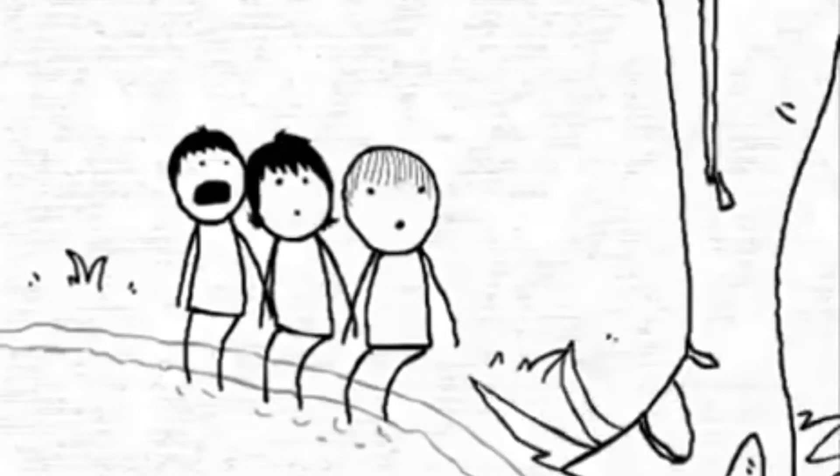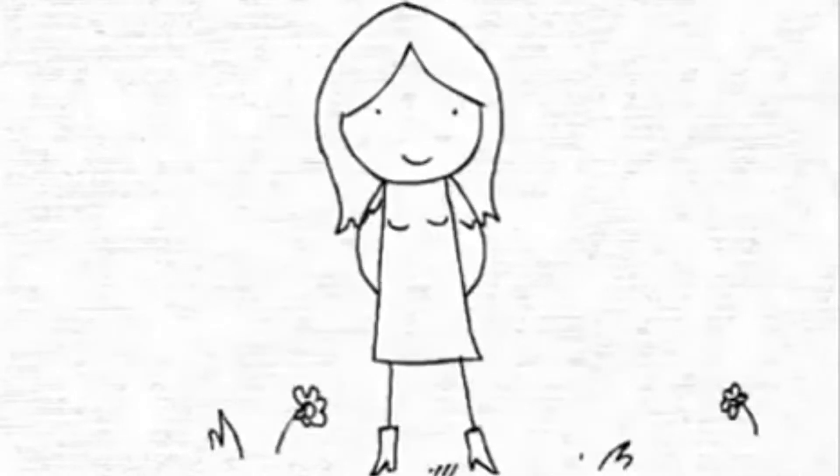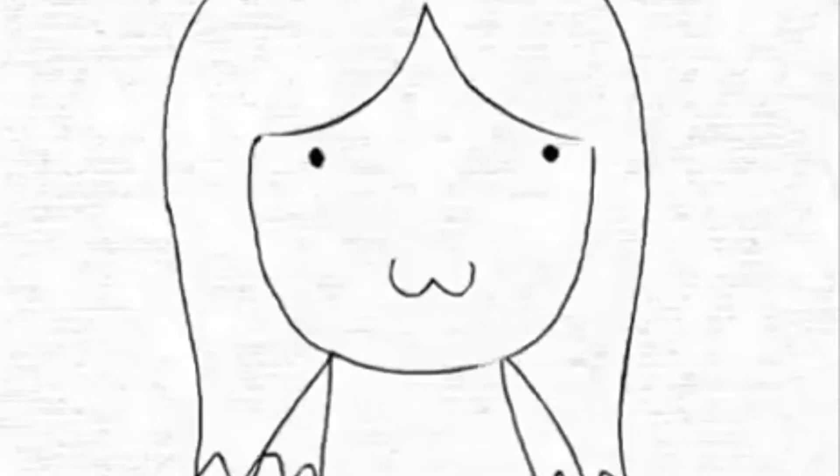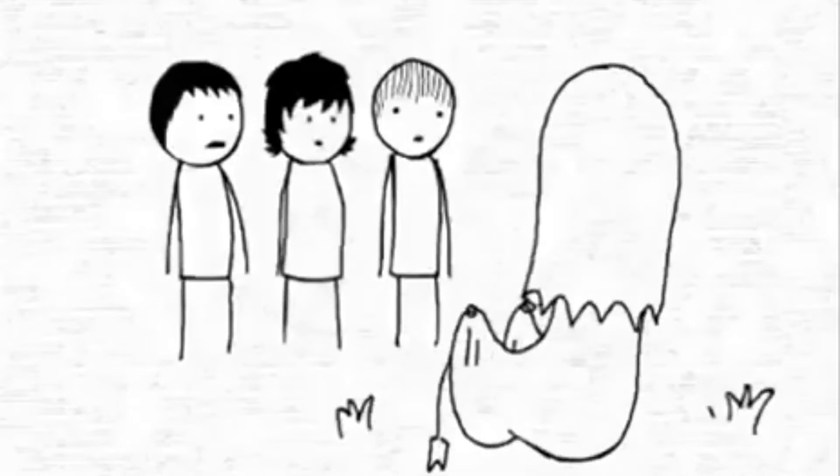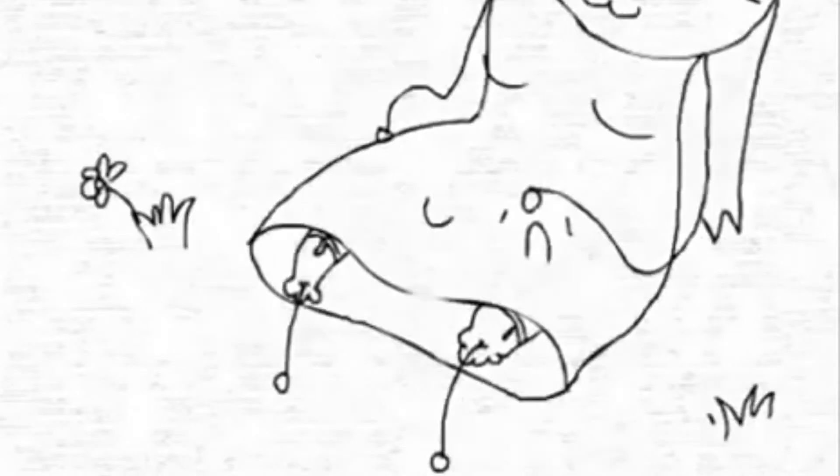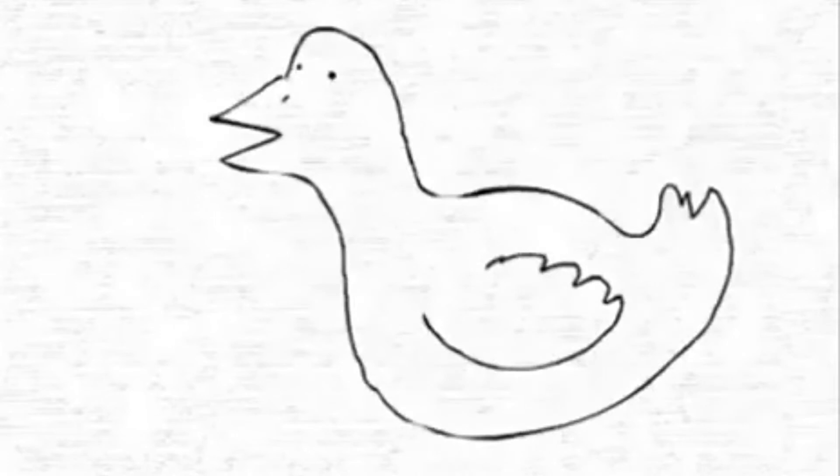There came a young lady. She looked like a pretty young creature. She sat on the grass, pulled up her dress and she showed them her ruffles and laces and white fluffy duck.